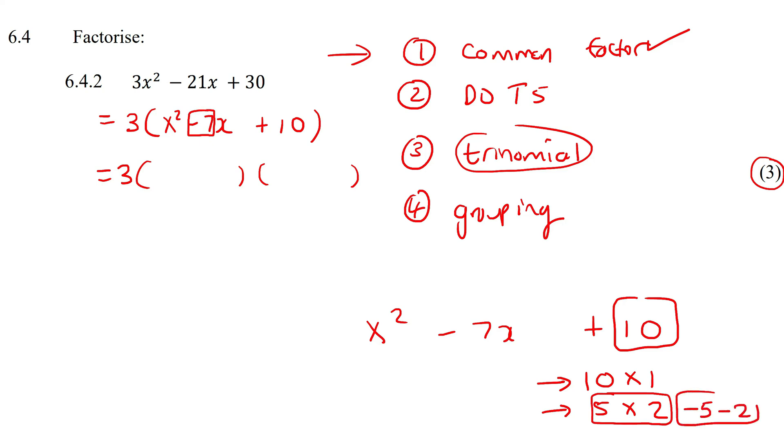How could we do that? Well I could use these two to make minus 7. I could say minus 5 minus 2, that gives me minus 7. So I say x and x because that gives me the x², and then minus 5 and minus 2. So this is the same as that.